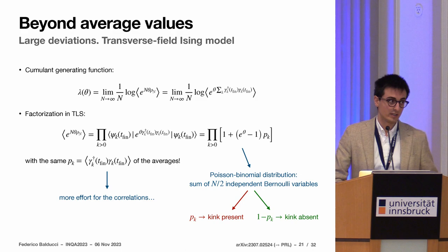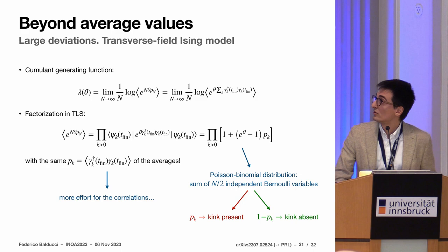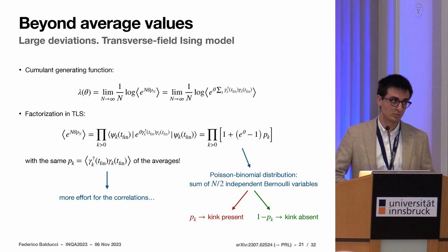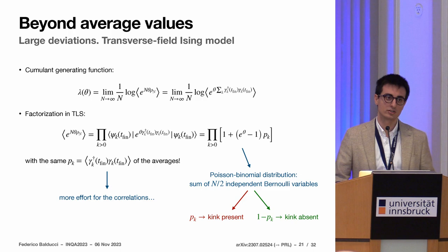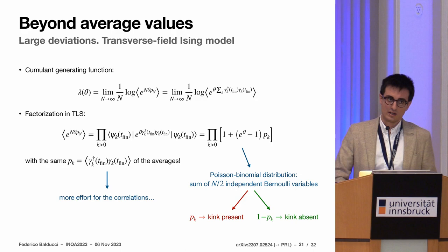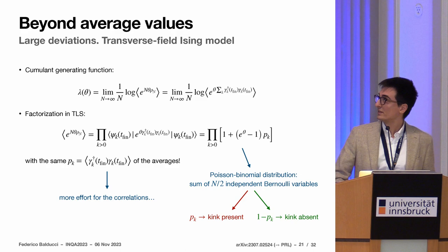Let's go beyond this average prediction. We have to compute the cumulant generating function in order to access the rate function. If you plug in the operator that counts the kinks in the exponent, you find that this factorizes thanks to the integrability, and you find this expression here. This expression is interesting for two reasons. First, we need pk, which was giving the average, and nothing more. We just have to use the same information we had already computed. Second, this cumulant generating function of the number of defects has the form of the cumulant generating function of a Poisson binomial distribution.